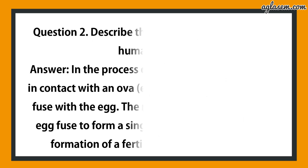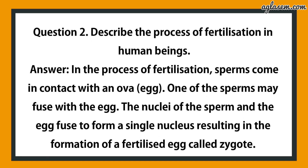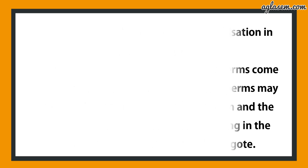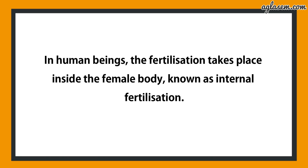Question number 2 says: describe the process of fertilization in human beings. In the process of fertilization, sperms come in contact with an ova or egg. One of the sperms may fuse with the egg. The nuclei of the sperm and the egg fuse to form a single nucleus, resulting in the formation of a fertilized egg called zygote. In human beings, fertilization takes place inside the female body, known as internal fertilization.